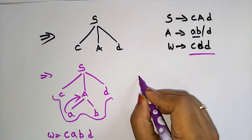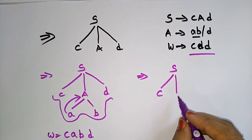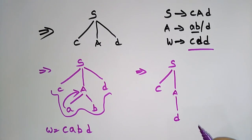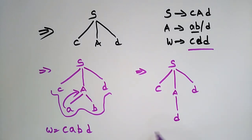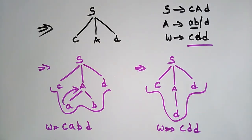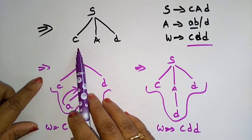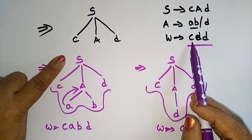After backtracking, next try the alternative production: replace A with d. So now the tree produces c d d. Check: does it match the input string? Yes, it matches w = cad. So the parse tree is now complete. The root node contains the start symbol S, and c matches the first symbol of the input string.